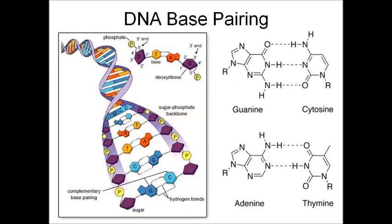For DNA, base pairing is based on hydrogen bonds, where complementary strands pair based on specific nucleotides: guanine with cytosine, or adenine with thymine. Guanine-cytosine pairing has three hydrogen bonds, whereas adenine-thymine only has two. The thermodynamics involved differ between these pairings — the bonds keeping guanine and cytosine together are much stronger. Therefore, separating GC hydrogen bonds requires a lot more energy than AT base pairs. This is important to understand as we talk about nucleic acid amplification methods.